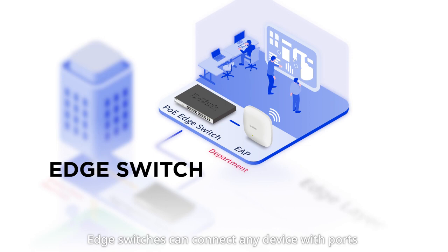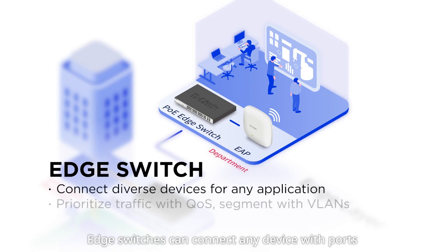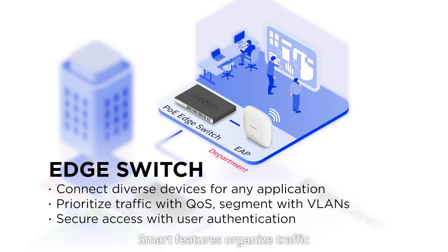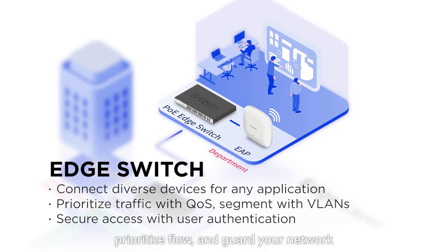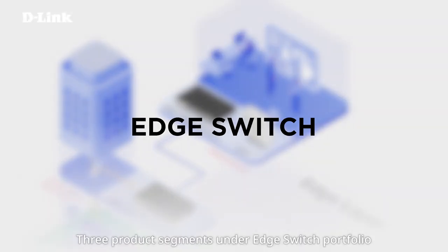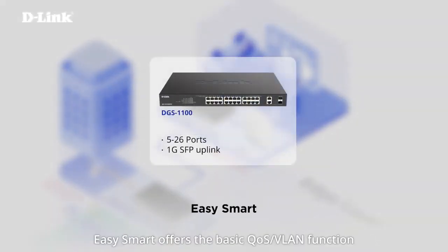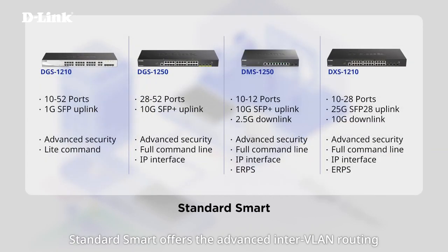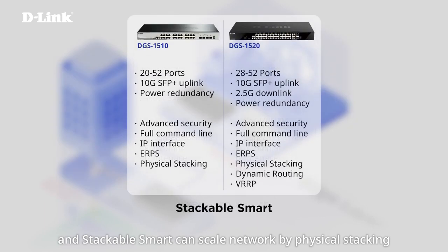Edge Switches can connect any device with ports scaling from 5 to 52 ports with optional PoE. Smart features organize traffic, prioritize flow, and guard your network. Three product segments exist under the Edge Switch portfolio: Easy Smart offers the basic QoS VLAN function, Standard Smart offers advanced inter-VLAN routing, and Stackable Smart can scale the network by physical stacking.